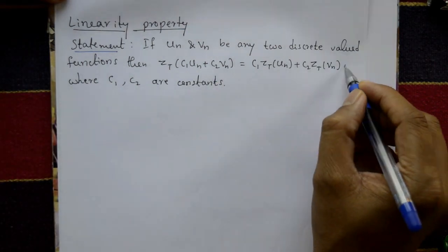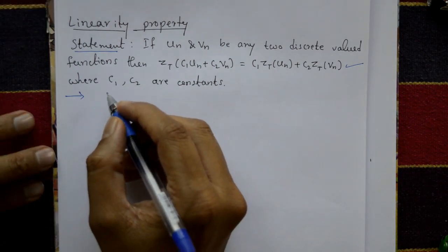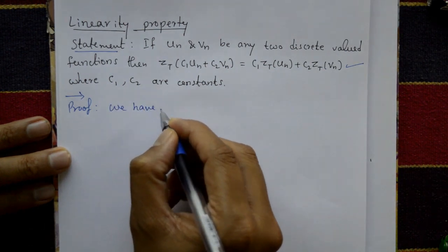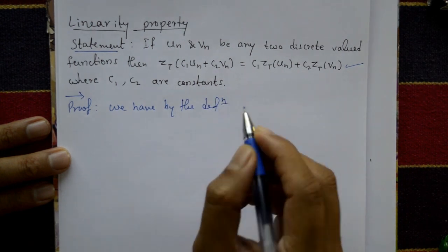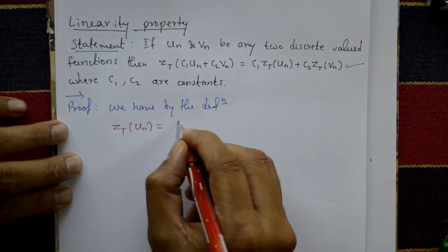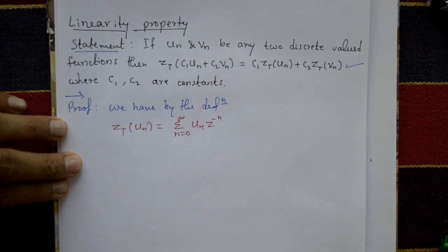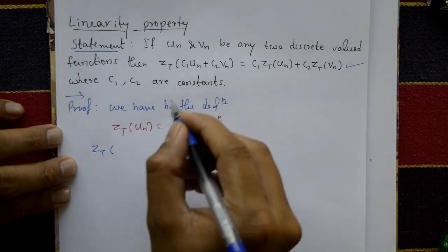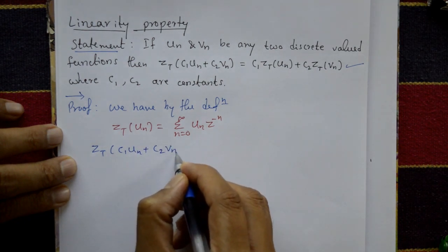Proof: By definition, the Z-transform of u(n) is equal to the summation from n=0 to infinity of u(n)·z^(−n). Now, taking the Z-transform of the left-hand side, Z{c1·u(n) + c2·phi(n)}, we apply this definition.